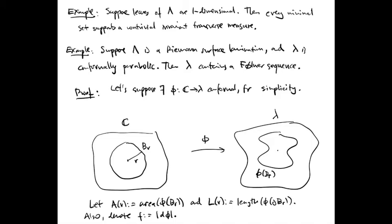One important special case is laminations with one-dimensional leaves. A one-dimensional leaf always has sub-exponential growth; in fact, its growth is at most linear. Therefore, every minimal set in a one-dimensional lamination supports a non-trivial invariant transverse measure.